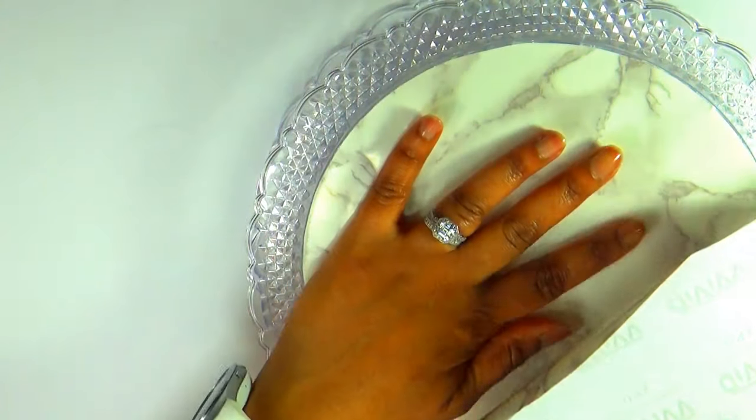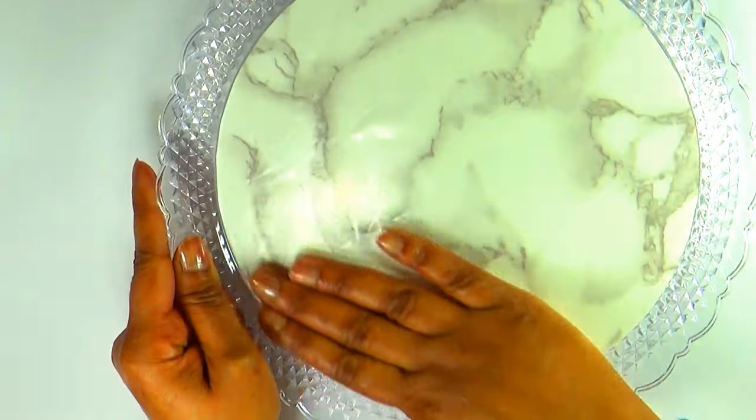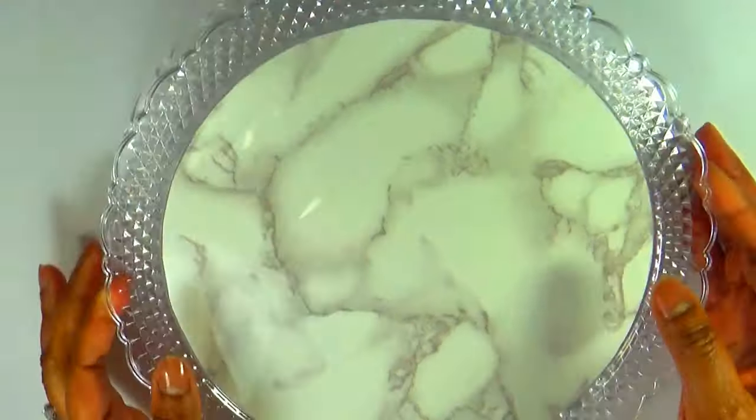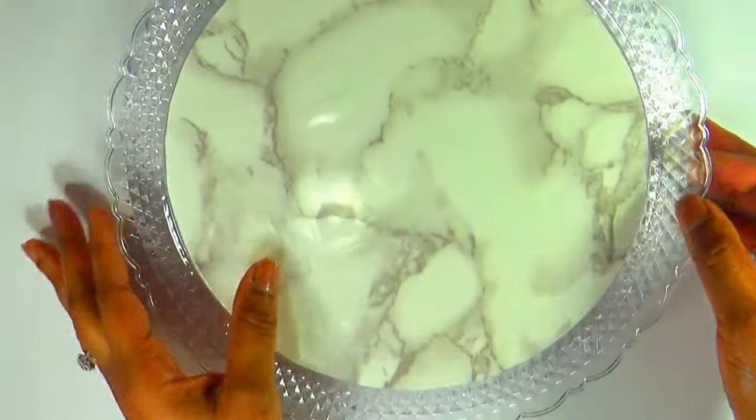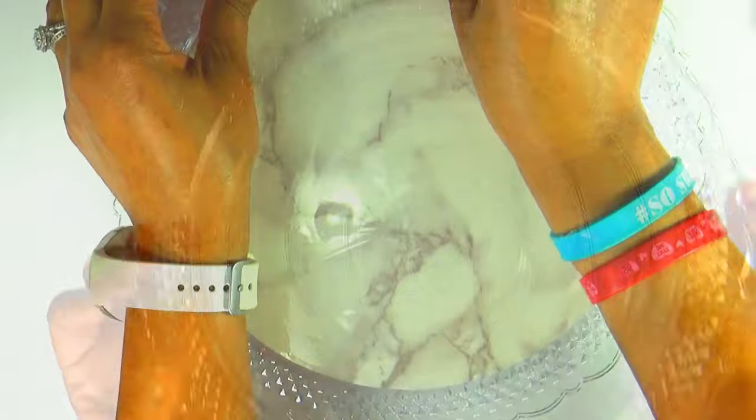Once I had it positioned the way I wanted, I went ahead and pulled the rest of the backing off. And I started smoothing out all of the bubbles. I was able to do this by just using my fingers. As you can see, it comes out pretty nicely.